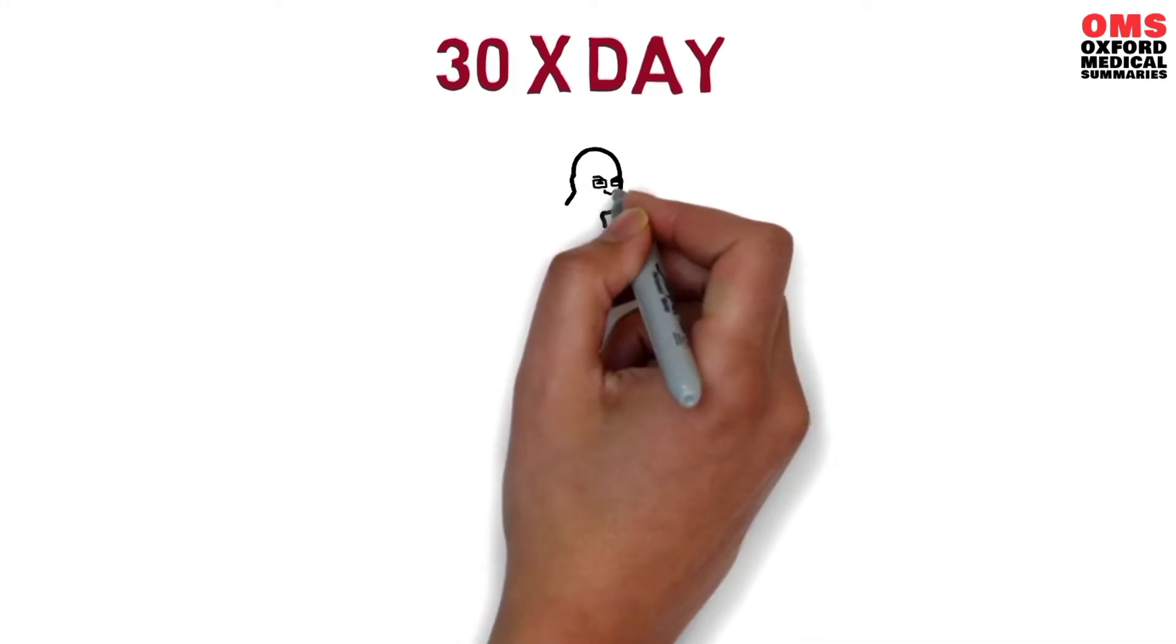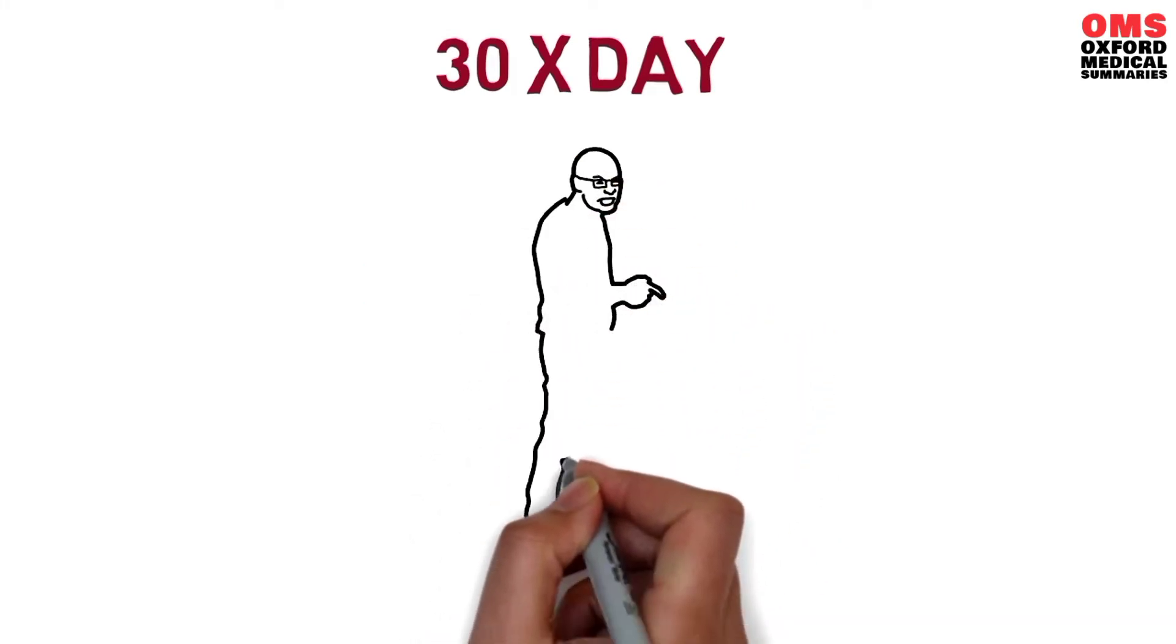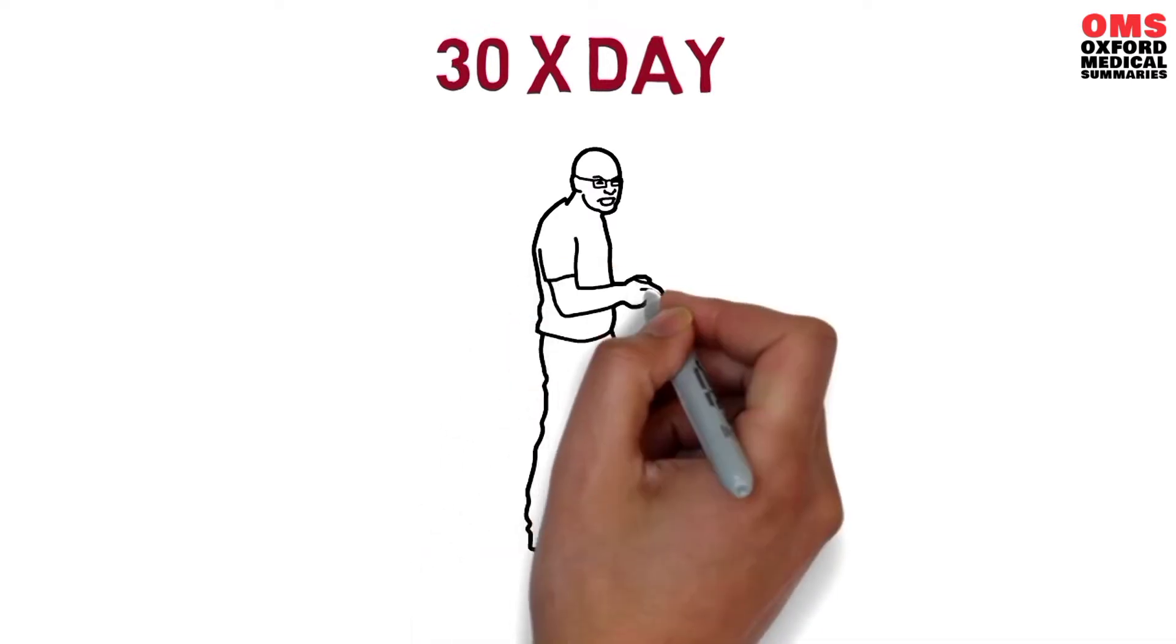On average a person complains 30 times a day. You notice it when it comes to other people but not necessarily when it comes to yourself. But what is the psychology of why we complain so much?